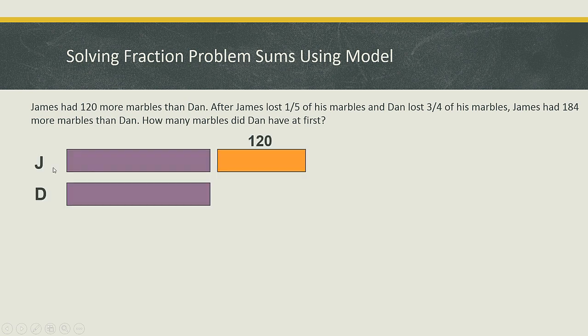We can draw it this way. So we can see that James, you draw one unit over here and then one unit over here. Then for James, you add an extra 120 over here. From the model, you can actually see very clearly that James had 120 more marbles than Dan.